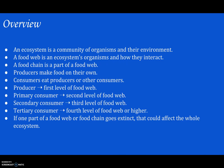Remember: an ecosystem is a community of organisms and their environment. A food web shows an ecosystem's organisms and how they interact, and a food chain is just a part of that food web. Producers make their own food, and consumers eat the producers or other consumers.